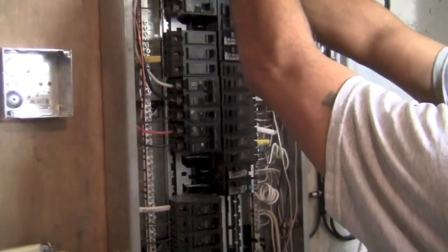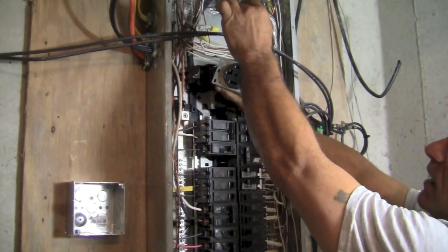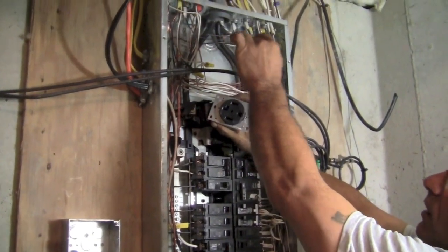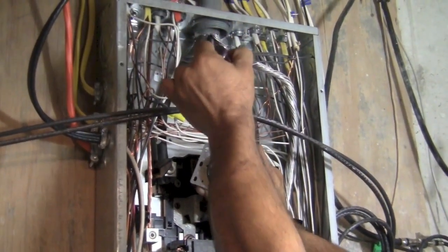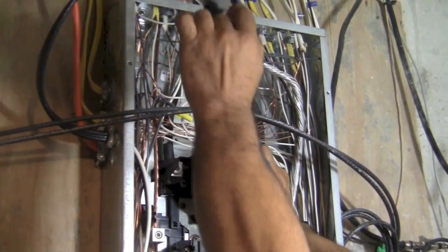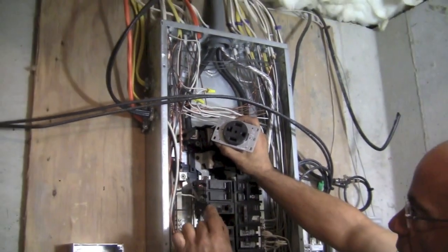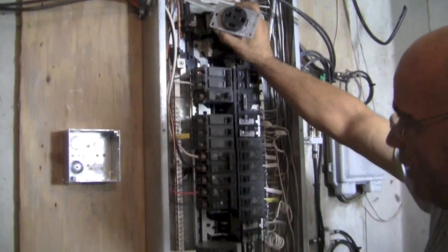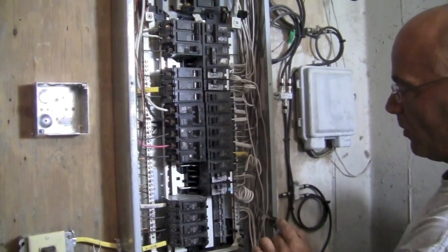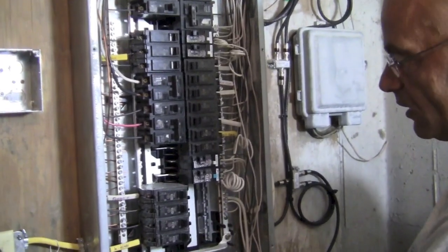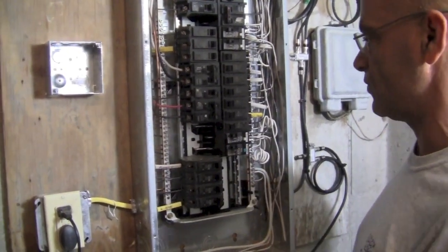If you look up here, as the electric comes in, we have our two hots. You got a hot one here, hot there. You have your neutral. If you notice, a ground does not come in from the street, because we're going to use the grounds that are coming here from our grounding rods, which come down to our grounding bar here. We have our neutral bar over here. They are connected together in here, which is code.